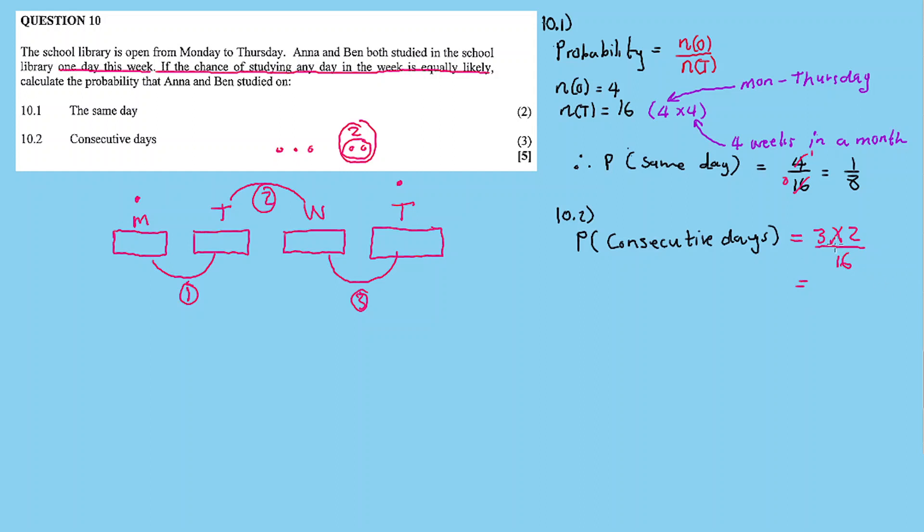So it's 3 times 2 divided by 16. So 3 times 2, that's 6 divided by 16. And the answer is 3 over 8.